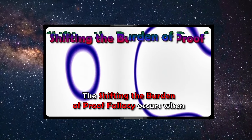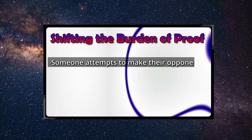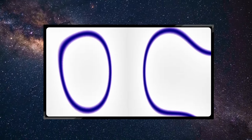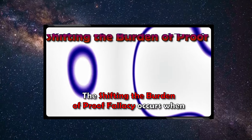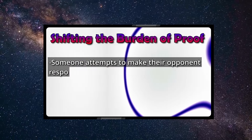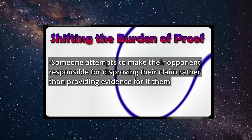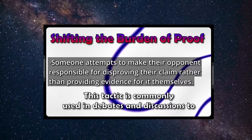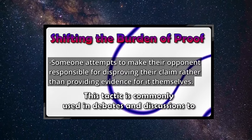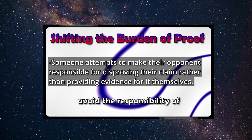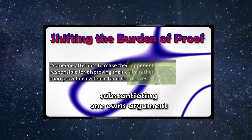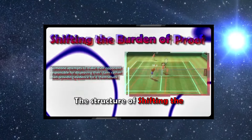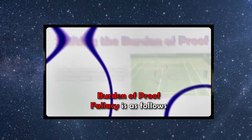The shifting the burden of proof fallacy occurs when someone attempts to make their opponent responsible for disproving their claim rather than providing evidence for it themselves. And that is about what shifting the burden of proof is. Unfortunately, we see Christians doing this over and over again in discussions, but for some reason I don't think you're going to address that in your video. This tactic is commonly used in debates and discussions to avoid the responsibility of substantiating one's own argument, effectively placing the onus on the other party to disprove a statement.